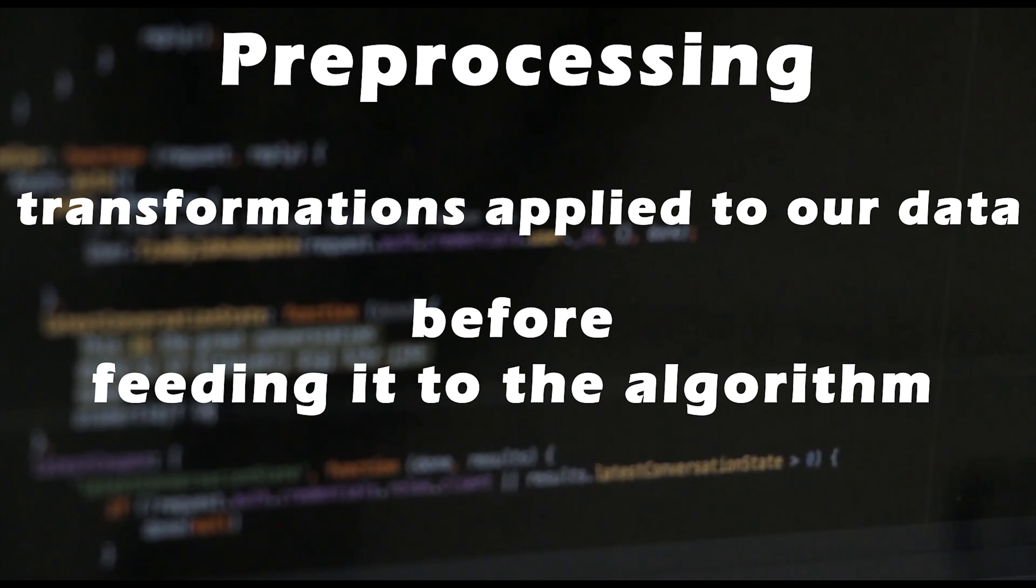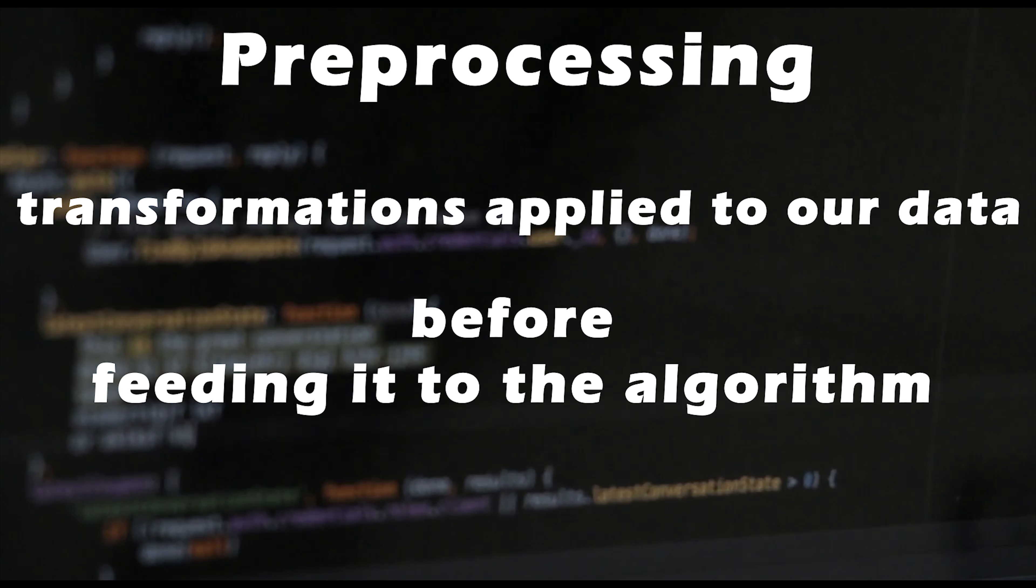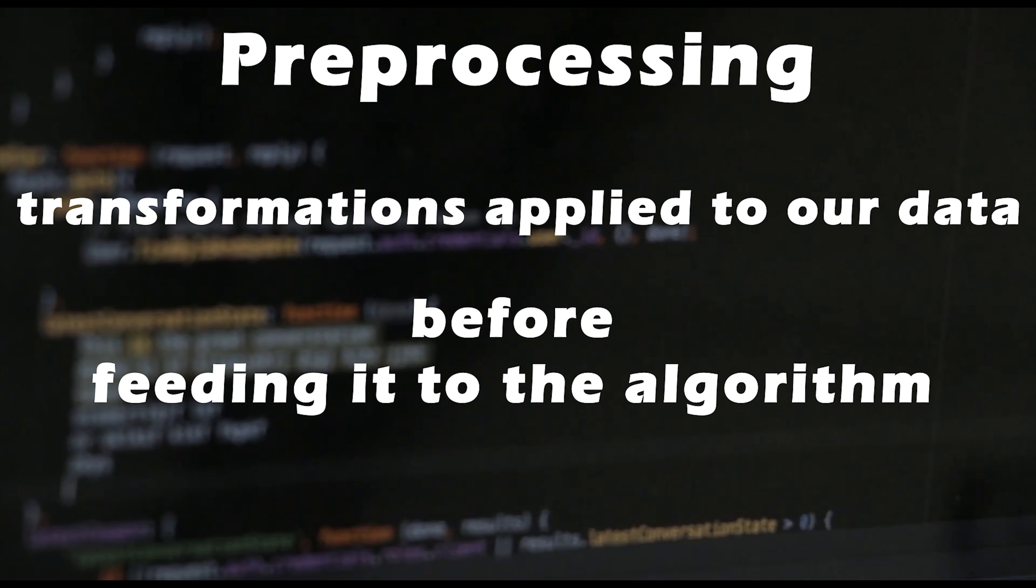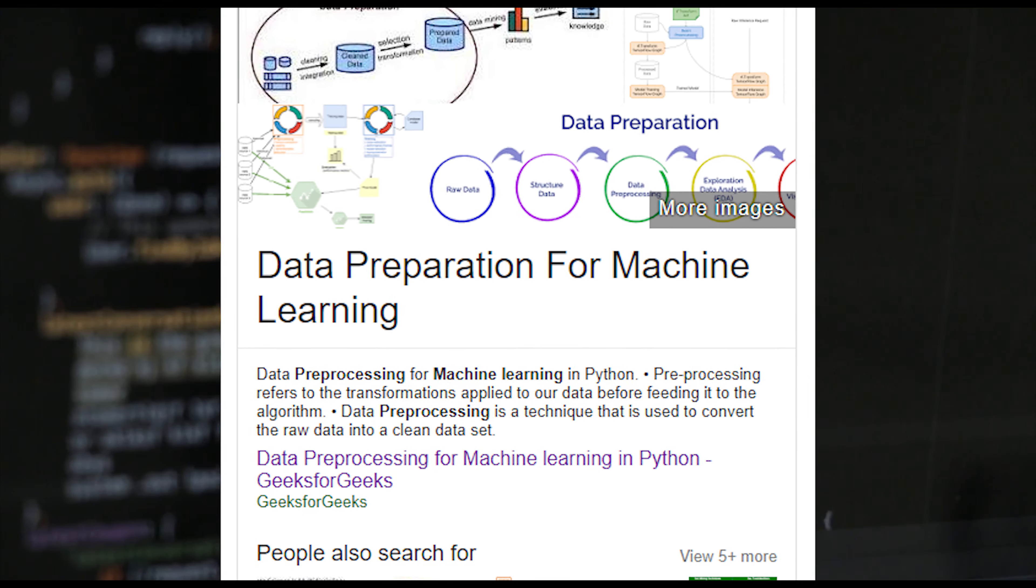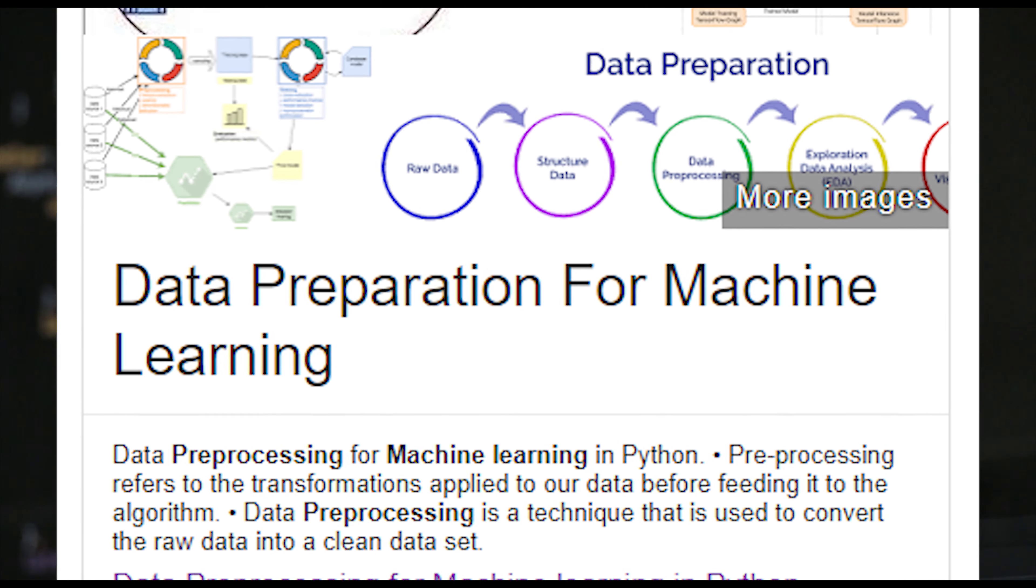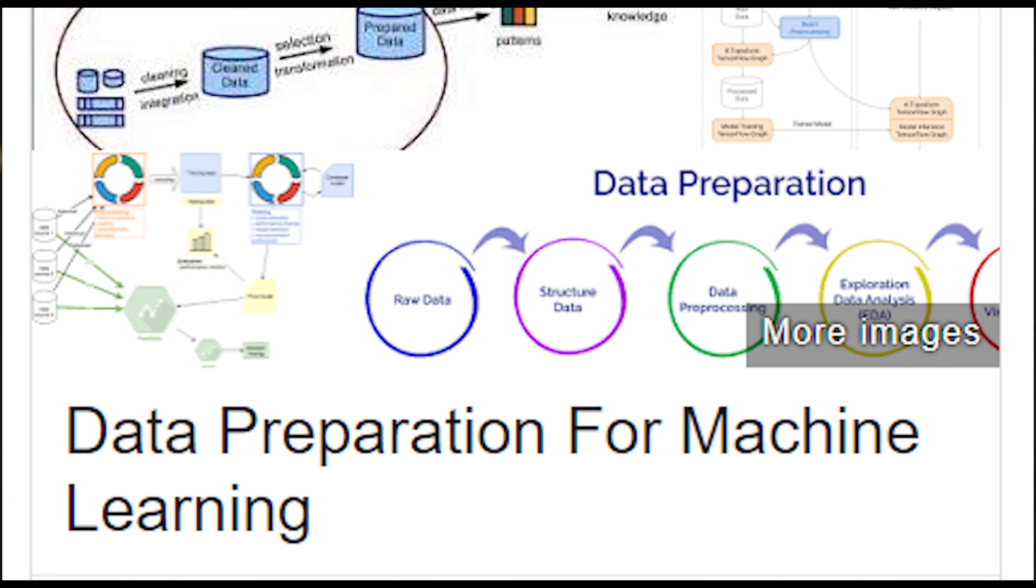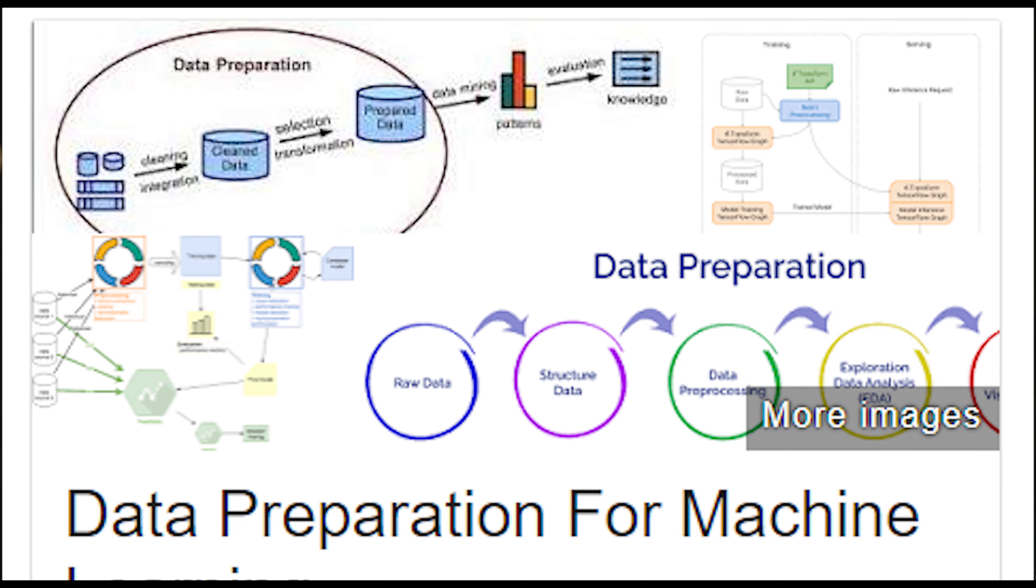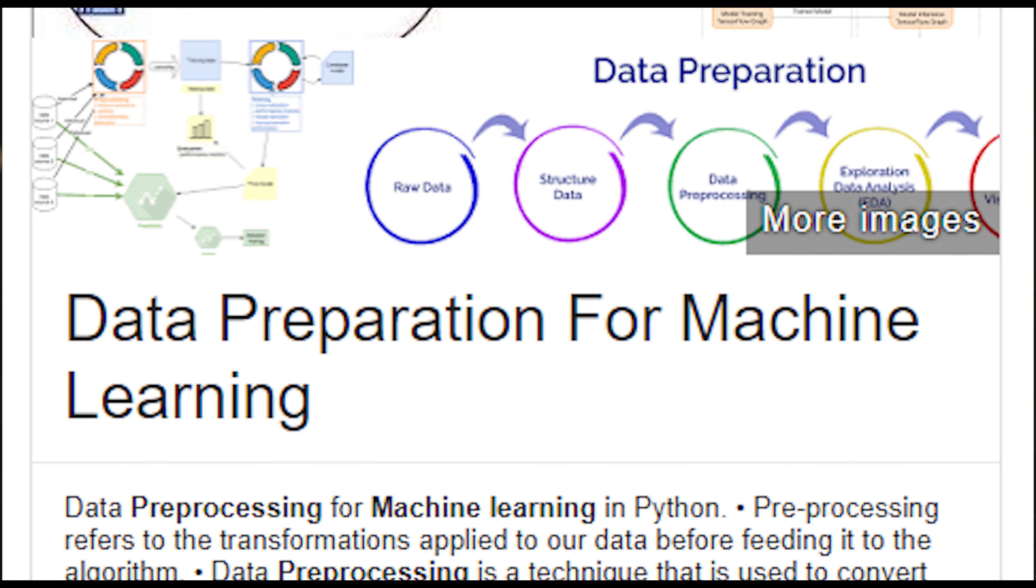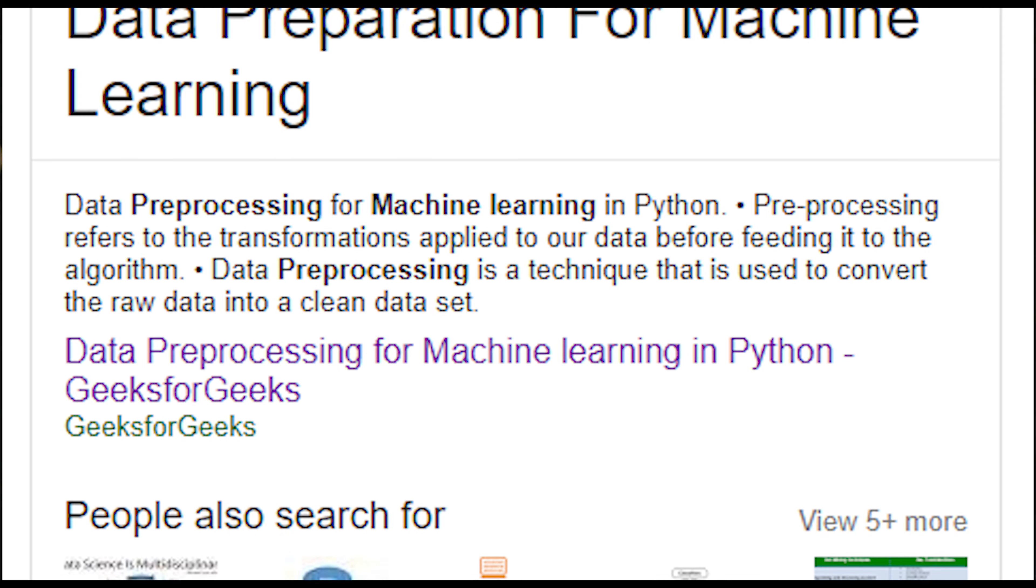Pre-processing refers to the transformations applied to our data before feeding it to an algorithm. Data processing is a technique that is used to convert the raw data into a clean data set. In other words, whenever the data is gathered from different sources, it is collected in a raw format which is not feasible for the analysis.